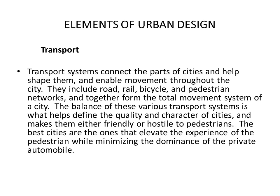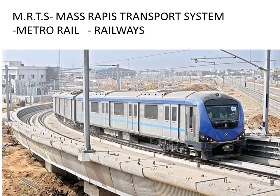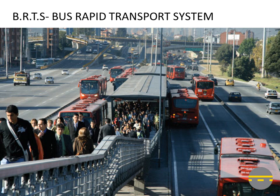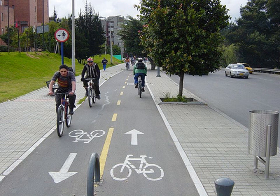The next element is transport. Transport systems connect the parts of a city, help shape them, and enable movement throughout the city. They include roads, rail, bicycle, and pedestrian networks, together forming the total movement system of the city. The balance of these various transport systems is what helps define the quality and character of cities and makes them either friendly or hostile to pedestrians. The best cities are ones that elevate the experience of pedestrians while minimizing the dominance of the private automobile. There are different kinds of transport systems — MRTS or Mass Rapid Transport Systems such as Metro Rail, BRTS or Bus Rapid Transport Systems, and cycle networks, which we should incorporate into our city designs.